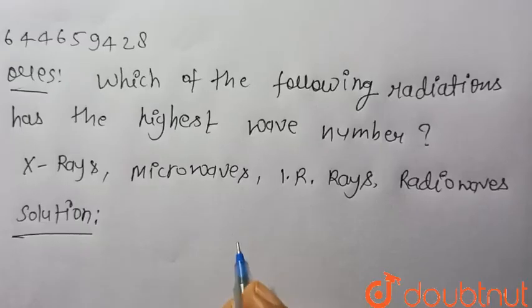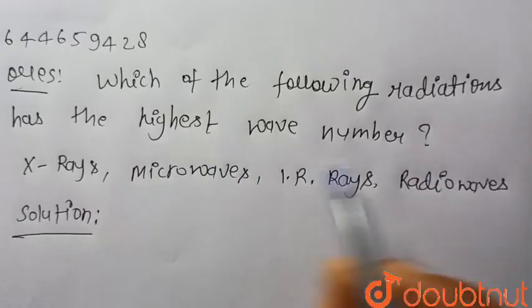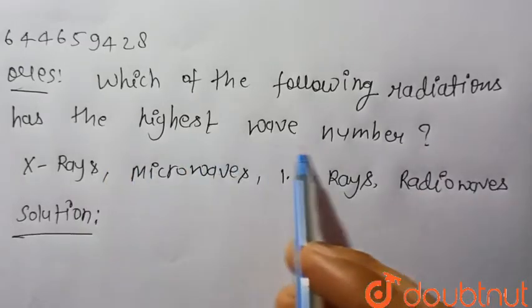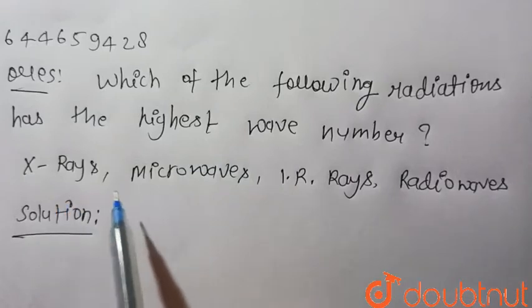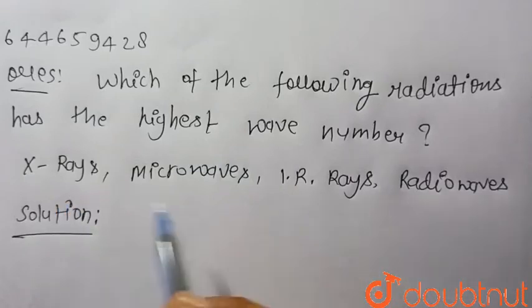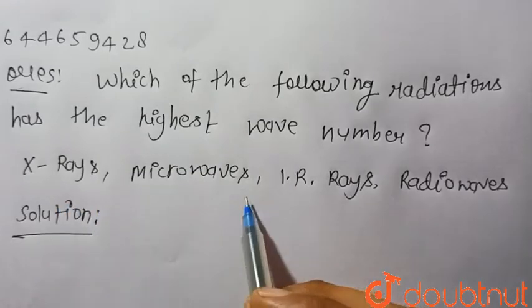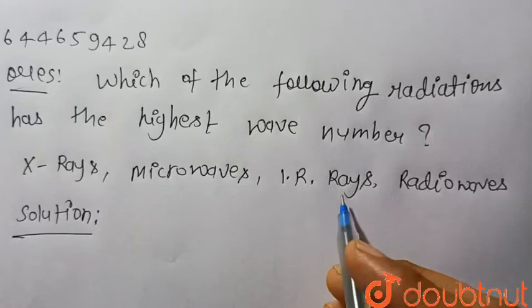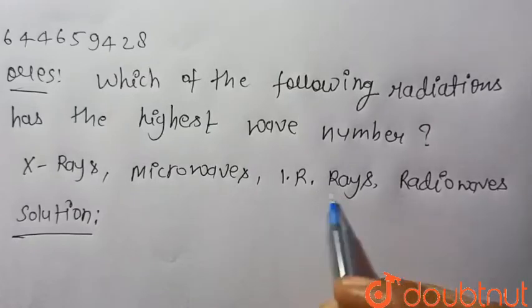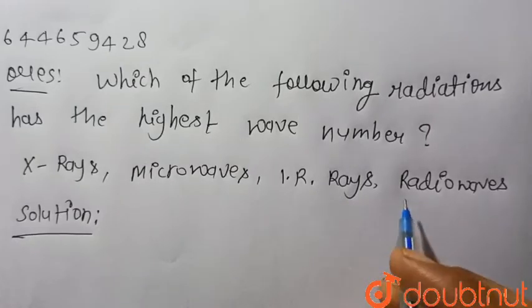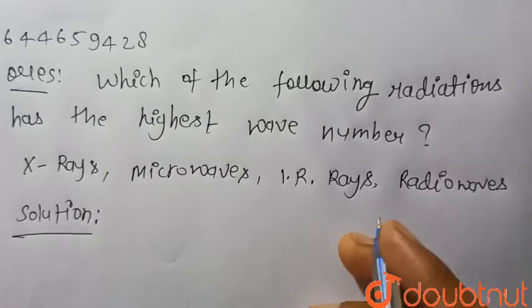Consider the given question: which of the following radiations has the highest wave number? The four radiations given are: first, X-rays; second, microwaves; third, infrared rays; and fourth, radio waves.